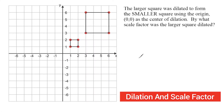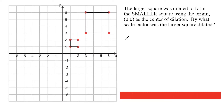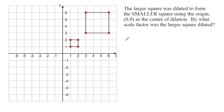Hey, this is Mr. Mason, and what we're going to do in this tutorial is we are going to determine by what scale factor a shape was dilated. The information given says that the larger square was dilated to form the smaller square, and we have to determine by what scale factor the larger square was dilated.